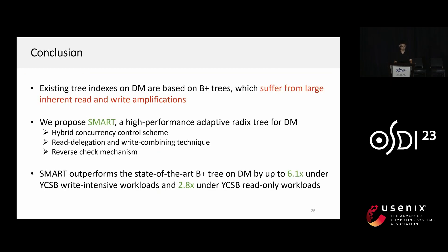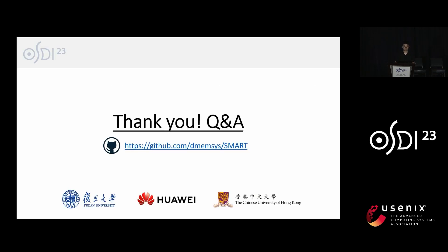In conclusion, existing indexes on DM are based on B+ trees, which suffer from large inherent read and write amplifications. In this paper, we propose SMART, a high-performance adaptive radix tree for disaggregated memory. Our experiments show that SMART can outperform the state-of-the-art B+ tree on DM by up to 6.1× under write-intensive workloads and 2.8× under the read-only workload. Thank you for listening.